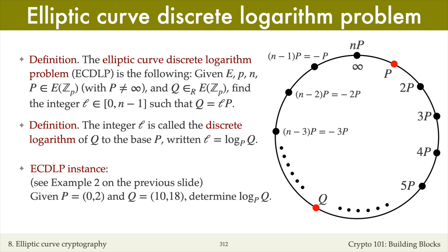Here's an instance of the ECDLP for the elliptic curve from the previous slide. Recall that this elliptic curve has 29 points. We're given the point P equals (0, 2), which serves as a generator, and some point Q equals (10, 18) on the curve.